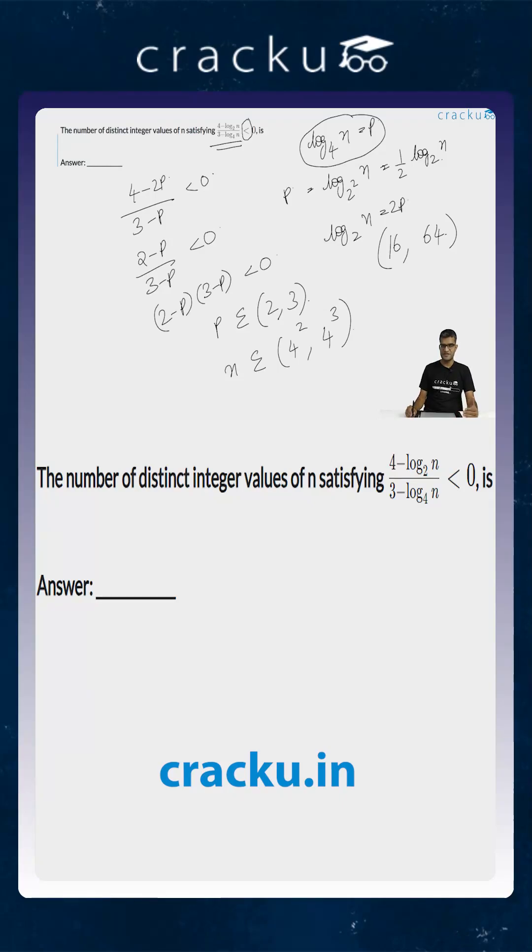So what are the values that n can take? It will be 17 or 18 or 19 up till 63. How many such values exist? That will be 63 minus 17 plus 1, which equals 47. So the number of distinct integer values that n can take is equal to 47.